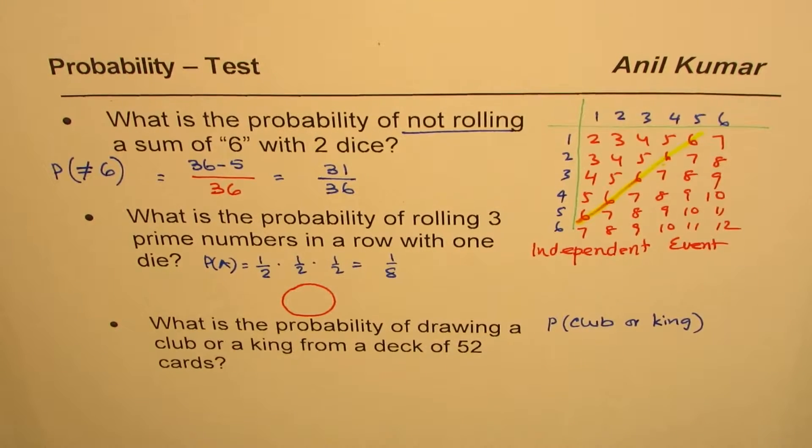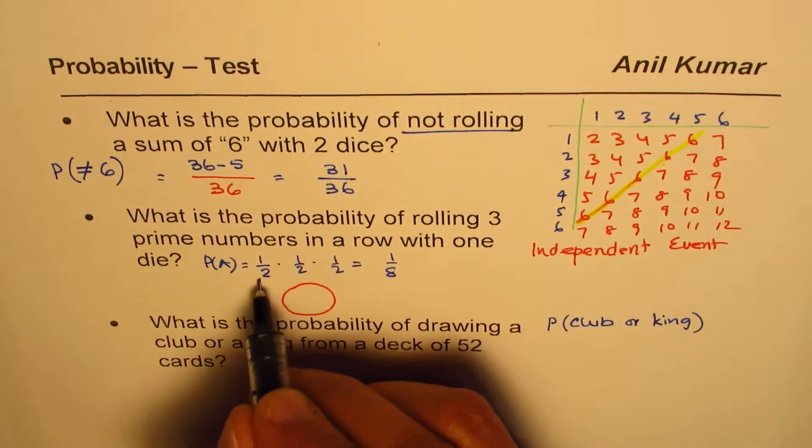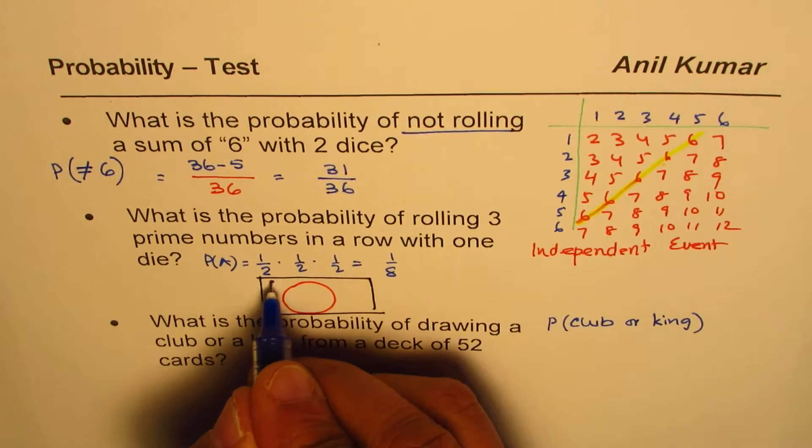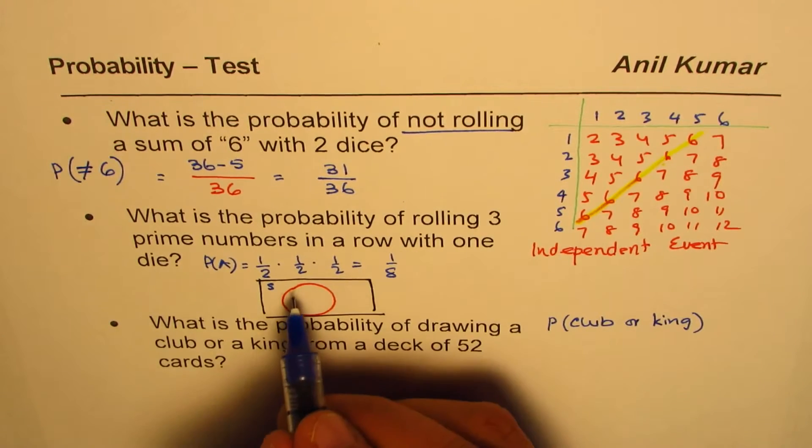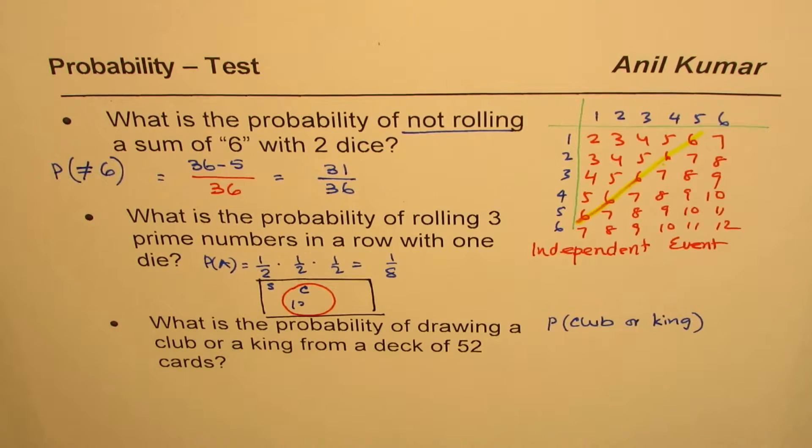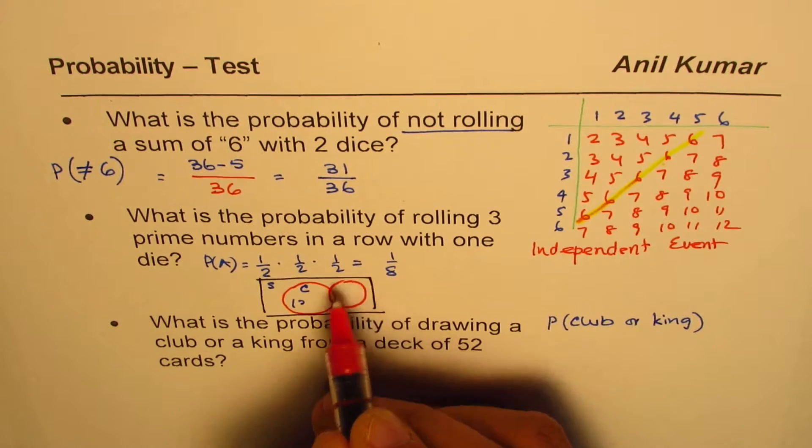So let me kind of make a sample space here. Okay, so in this sample space we have 13 clubs. Clubs are 13. I'm not writing the number. Now how many kings are there? Kings are four. Now do we have any overlap?